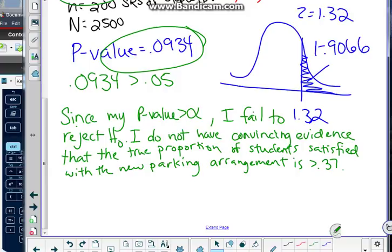When I fail to reject, that means I do not have any convincing evidence. So I do not have convincing evidence that the true proportion of students satisfied with the new parking arrangement is greater than 0.37. So what does that mean?